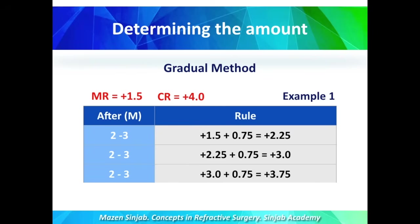After two to three months, the patient should come again. If they are tolerant to plus 3, I can add another 0.75 to become plus 3.75 to try for another two to three months. Otherwise, I will stop at plus 3 diopters and treat those 3 diopters.